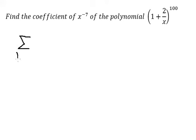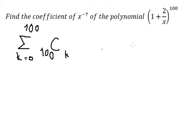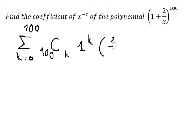We have the summation with k equals zero to 100. We have the combination with 100 on top, and k on the bottom. We have one to the power of k, and we have two over s to the power of one minus k.